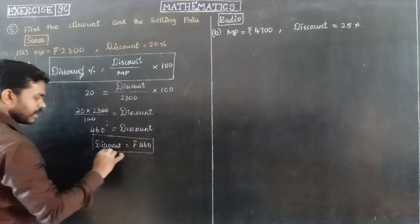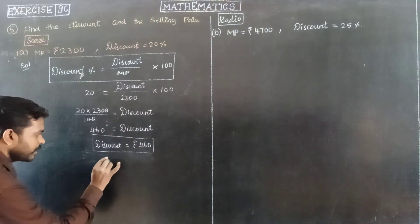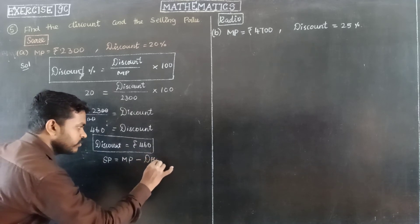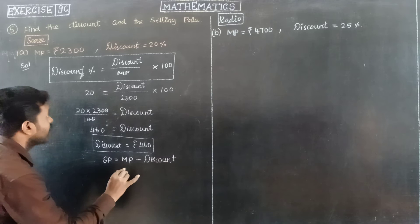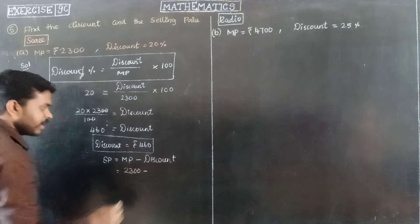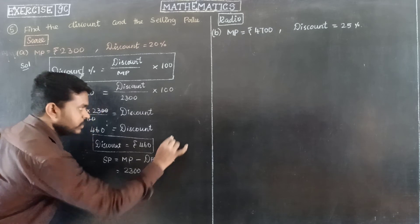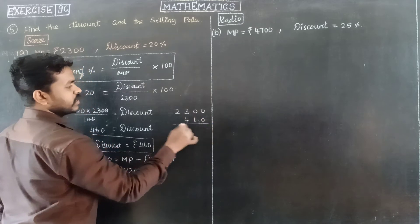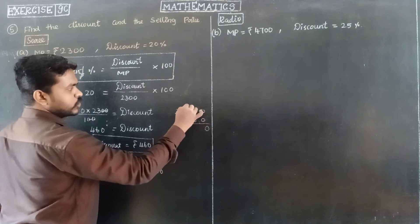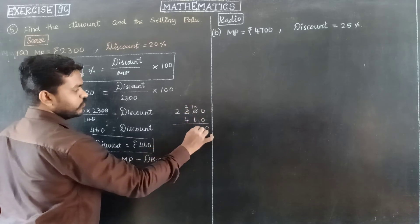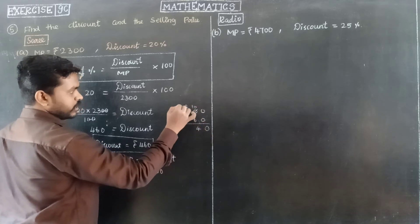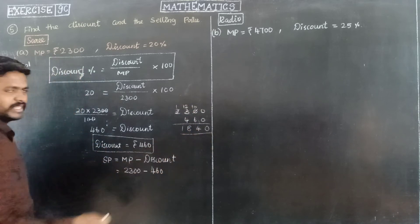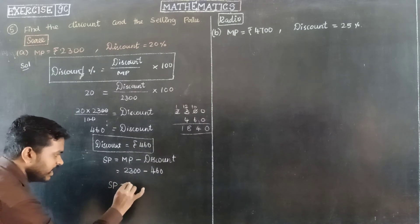So discount is ₹460. Selling price is equal to marked price minus discount. Selling price equals 2300 minus 460. Subtracting: 2300 minus 460 equals 1840. So the selling price of the sari is ₹1840.